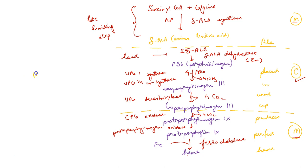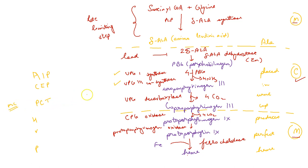There is a simple mnemonic for porphyrias: ACP and the last three steps HVP. If there is deficiency of the respective enzyme, it causes the corresponding porphyria. A is for acute intermittent porphyria, which occurs due to deficiency of uroporphyrinogen 1 synthase. C is congenital erythropoietic porphyria, due to deficiency of uroporphyrinogen 3 cosynthase. P is porphyria cutanea tarda, the most common porphyria in adults, due to deficiency of uroporphyrinogen decarboxylase.